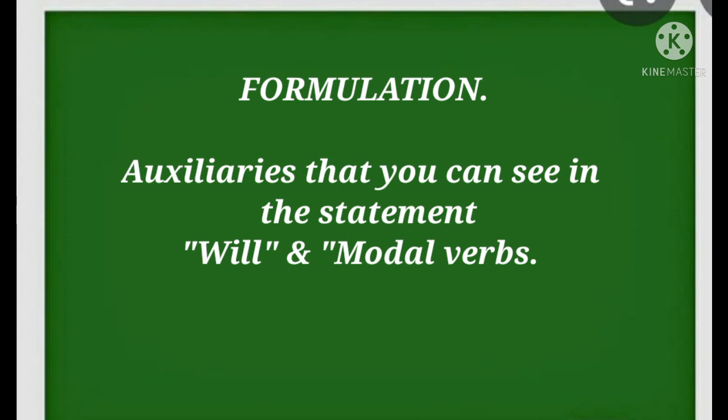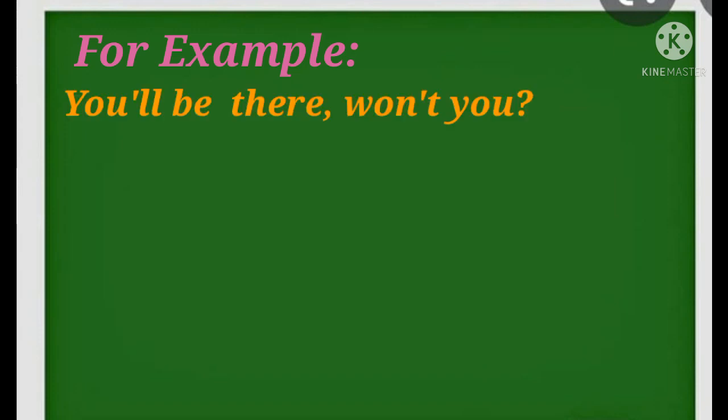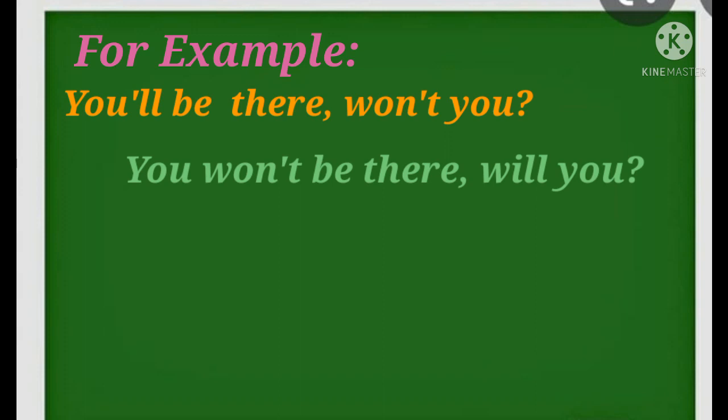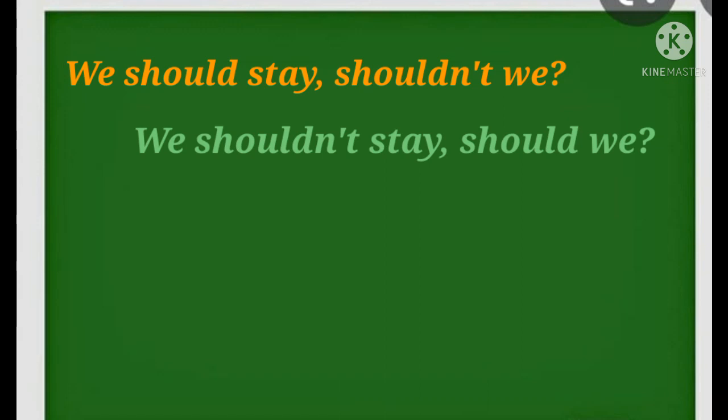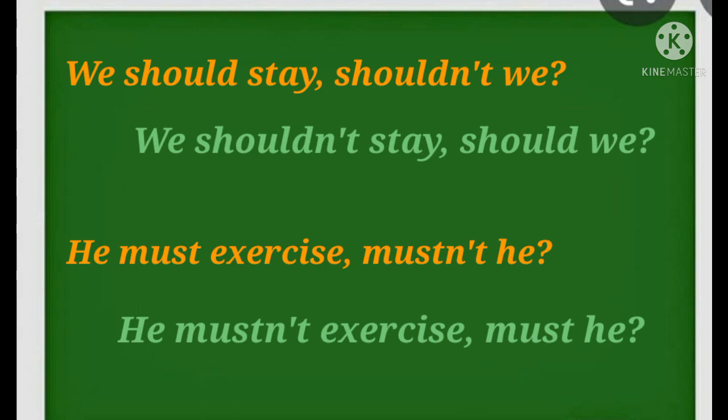The next group where you can see the auxiliary in the statement is sentences with will and modal verbs. For example: you'll be there, won't you? You won't be there, will you? I can go, can't I? I can't go, can I? It could happen, couldn't it? It couldn't happen, could it? We should say, shouldn't we? We shouldn't say, should we? He must exercise, mustn't he? He must not exercise, must he?